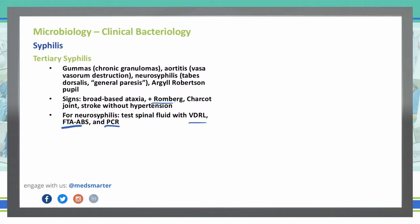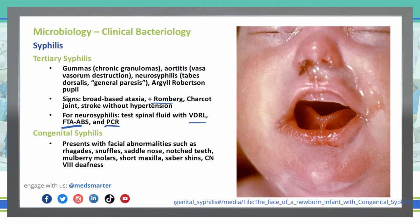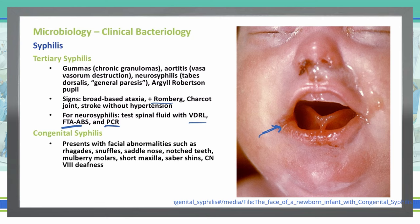Congenital syphilis causes facial abnormalities in newborns, including rhagades — which are linear cracks or fissures in the skin, typically seen at the angles of the mouth. Other features include snuffles, saddle nose, notched teeth, mulberry molars, short maxilla, saber shins, and cranial nerve 8 deafness. Those are the presentations for congenital syphilis.